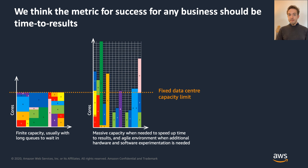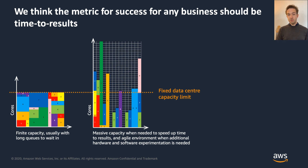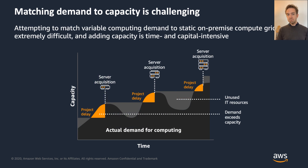At AWS we believe you shouldn't have to worry about capacity — only about the end business need, which is accurate CFD. If you need to run on 5,000 cores, you just do it with no queue. If you only need 200 cores, that's fine too, and you only pay for the time you're using. You don't need to provision a large cluster on the off-chance you'll run a high-fidelity hybrid RANS-LES simulation.